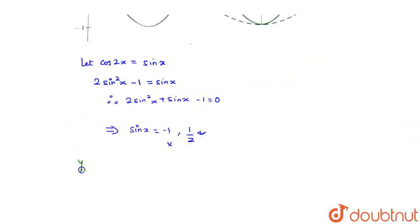Y equals cos 2x intersects at x equals plus minus pi by 6 and 5 pi by 6, giving us three points.